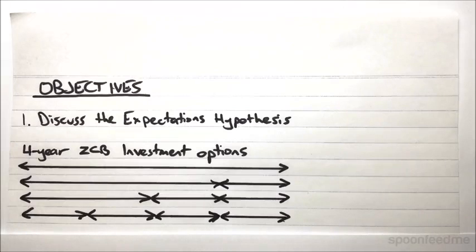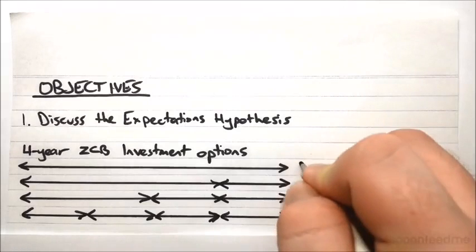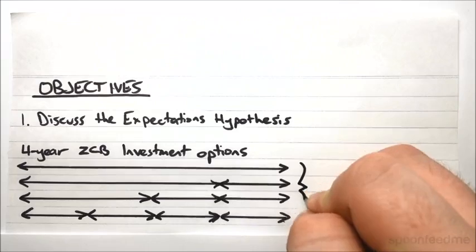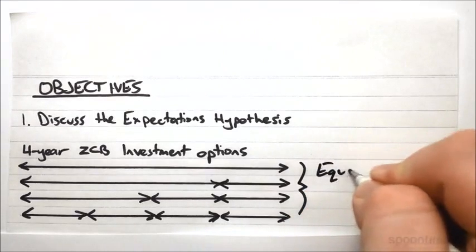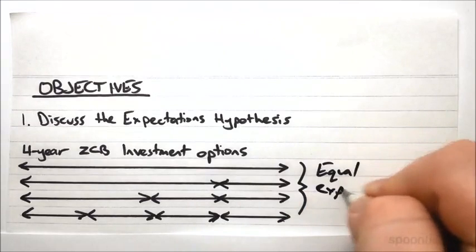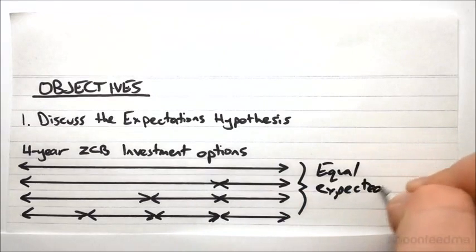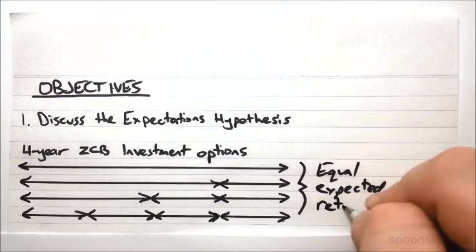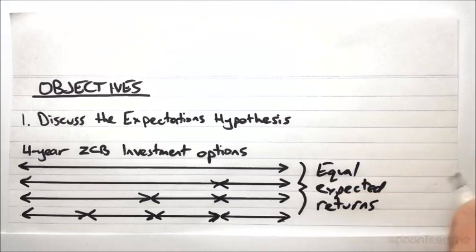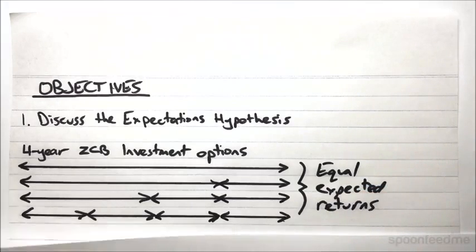Most simply, the expectations hypothesis says that the expected returns on all of these options are equal. So we have equal expected returns. And obviously not just for four-year term, I just did that as an example, but you can generalize that out to any time period.